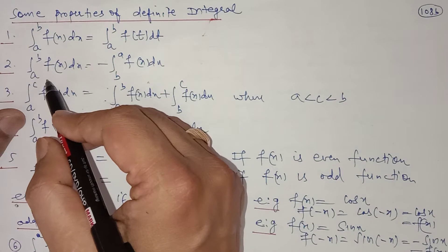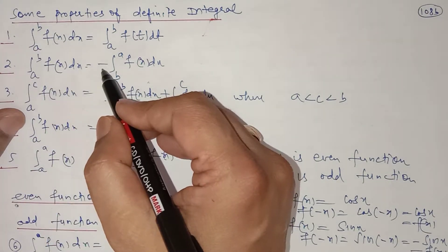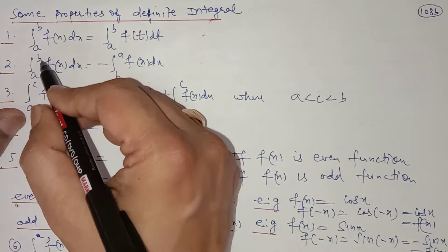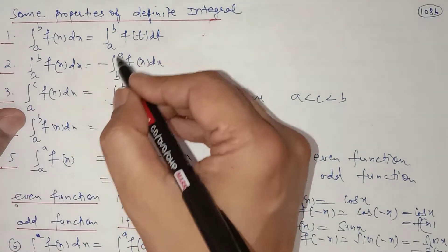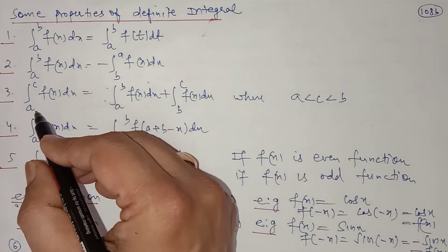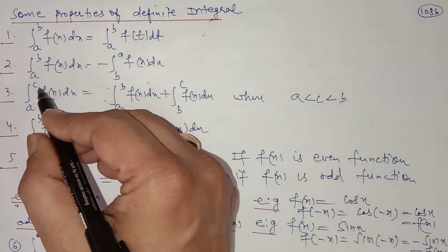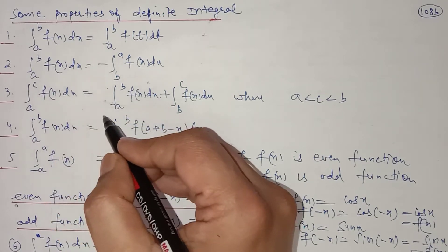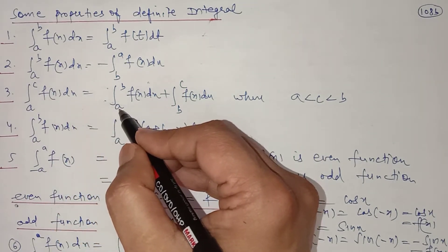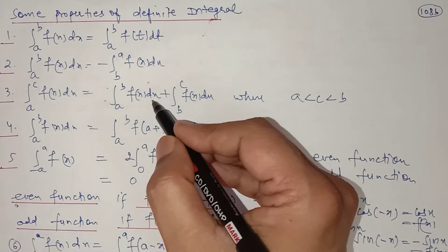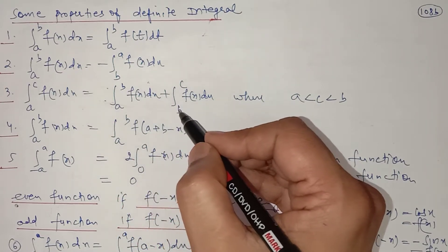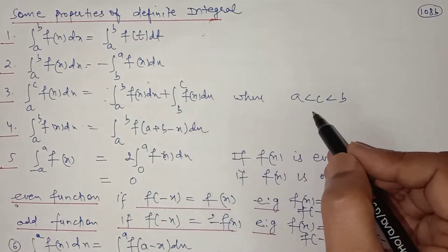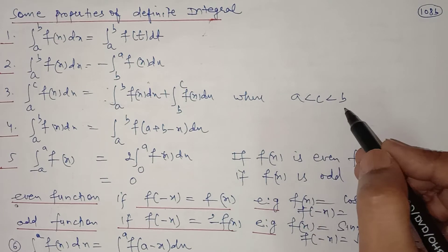The second property is: if we interchange the limits, the sign of the definite integral changes. That is, if we have the integral from a to b, we can write it as minus the integral from b to a. The third property is: an integral from a to c of f(x) can be broken into two integrals — from a to b plus from b to c — provided b lies between a and c.